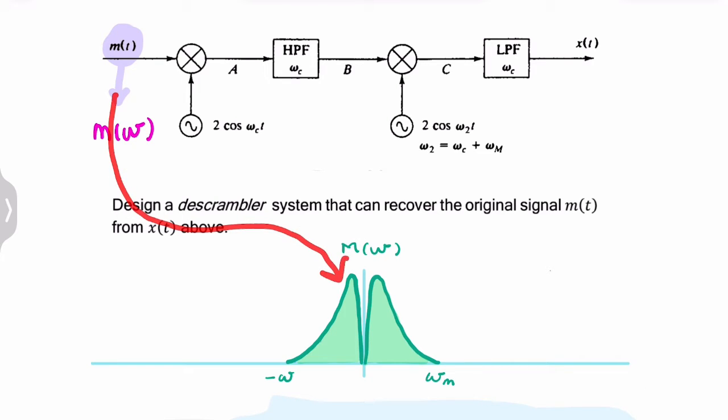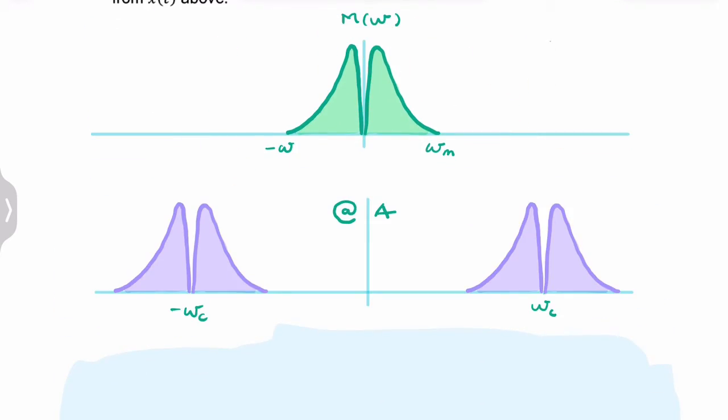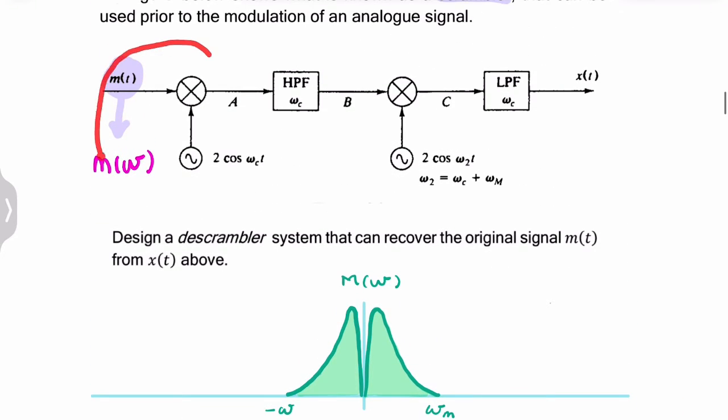If M(ω) looked like this band limited to ωₘ, the modulating frequency, then at point A after modulation, you would expect to have two copies: one at ωc and another copy at minus ωc. So this is what would happen at A. Essentially it's DSB modulation. So our first step is DSB suppressed carrier.